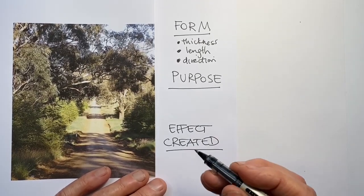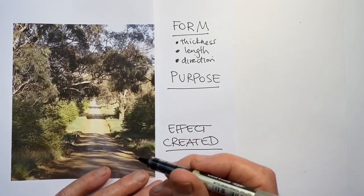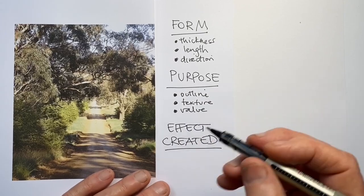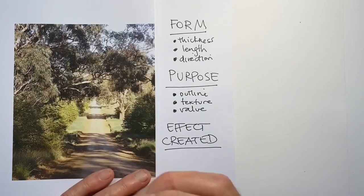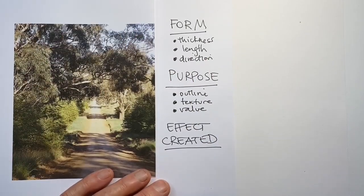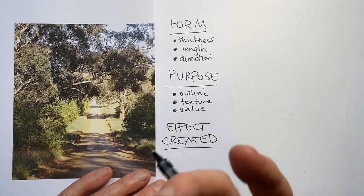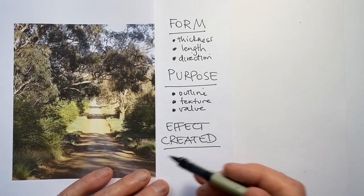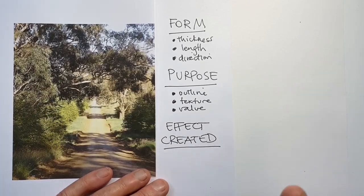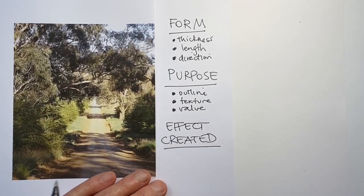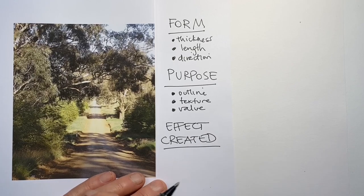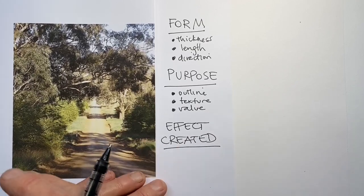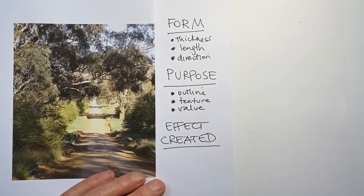The second area I think about is the purpose of the mark. Is my mark creating outline? Am I defining a shape? Is my mark more connected with creating a sense of texture, such as the effect of all these leaves? Or is my mark concerned more with establishing value of some sort — of the light or dark or of the local colour of a particular part of my scene?